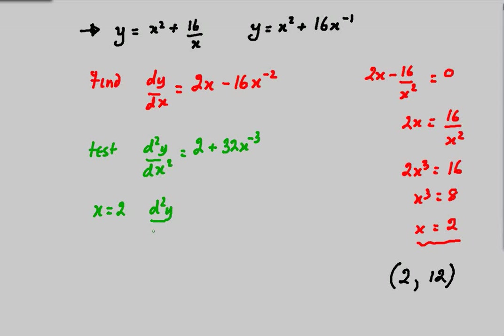Testing that point: using x = 2, my second differential 2 + 32/x³ most definitely will give a positive value, and positive values tell me that I have found a minimum.